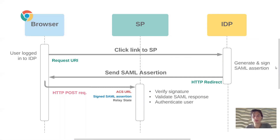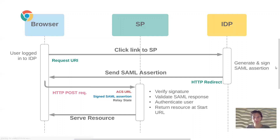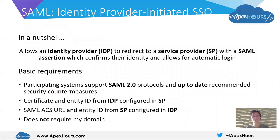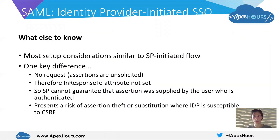It'll authenticate the user — as part of this the service provider will check that the user is authorized to have access, for example checking that they don't have a deactivated account. The service provider will then issue a session and redirect the user to either the resource at the start URL — if Salesforce is the service provider we can configure a start URL with the default page the user should be logged into — or if the service provider supports it, it will redirect to the relay state provided by the identity provider, which would normally be one of a whitelist of links.